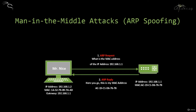ARP spoofing is a technique by which the attacker sends spoof ARP messages to a LAN. Generally the aim of this attack is to associate the attacker's MAC address with the IP of another host, such as the default gateway in most cases, causing the traffic to be sent to this IP address rather than the legitimate IP address.